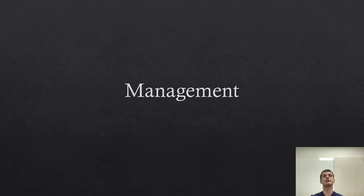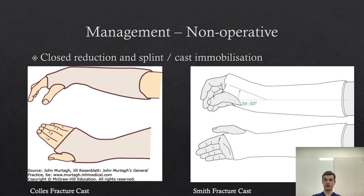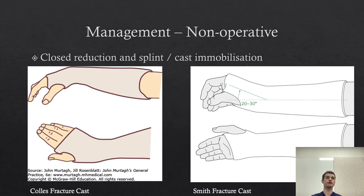Regarding fracture management, there are two main streams. The non-operative or conservative management involves closed reduction and splint-cast immobilisation. For the Colles and Smith fractures, the most appropriate plaster positions are shown. The Colles fracture uses wrist flexion and ulnar deviation to correct the deformity, while the Smith, being the opposite, uses radial deviation and extension of the wrist. Appropriate pre- and post-reduction x-rays help confirm successful reduction and good alignment. Appropriate reduction with good anaesthesia — whether a Bier's block, haematoma block, procedural sedation, or even general anaesthetic — can often lead to an appropriate outcome.